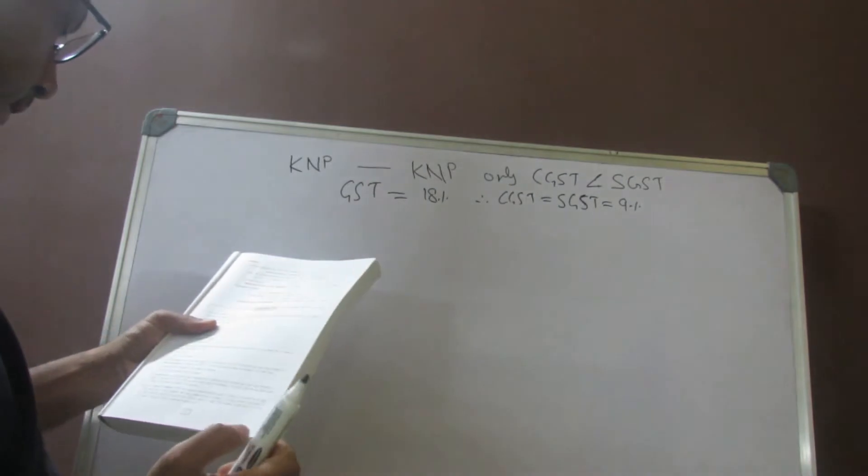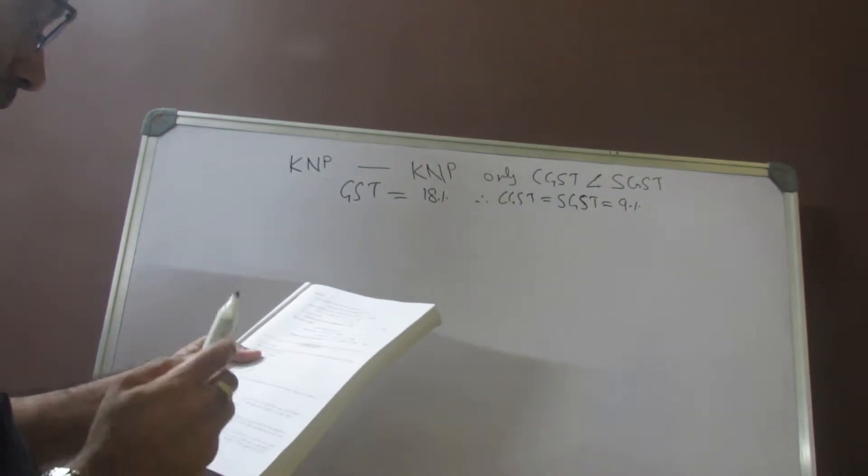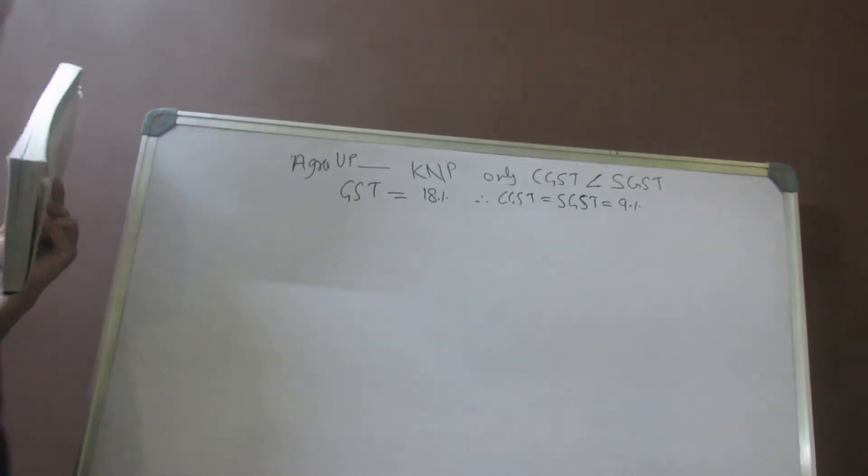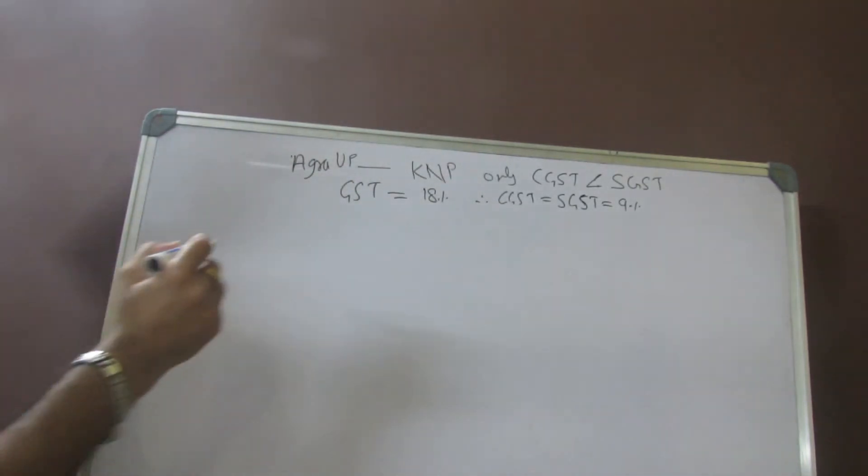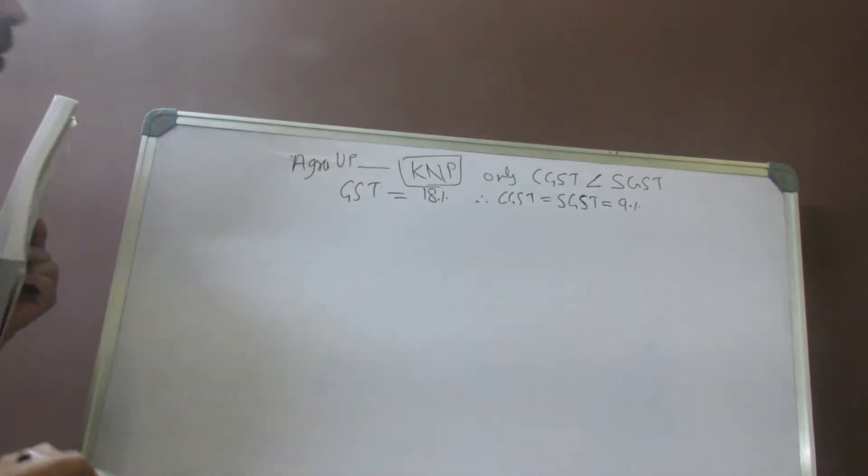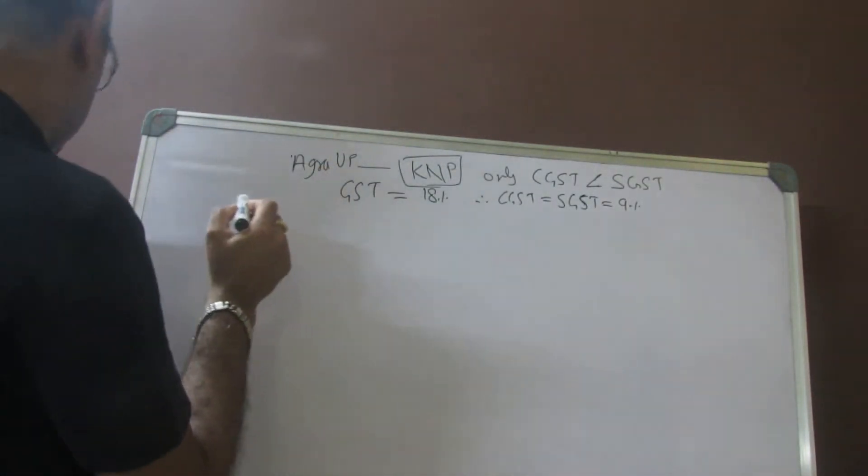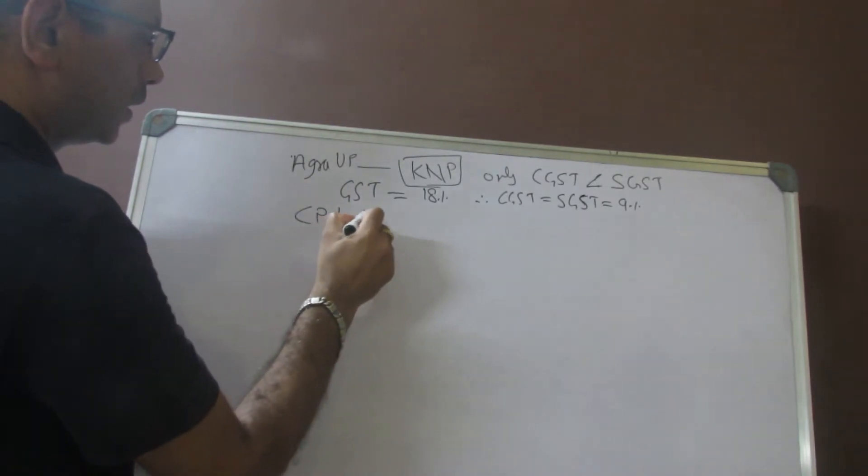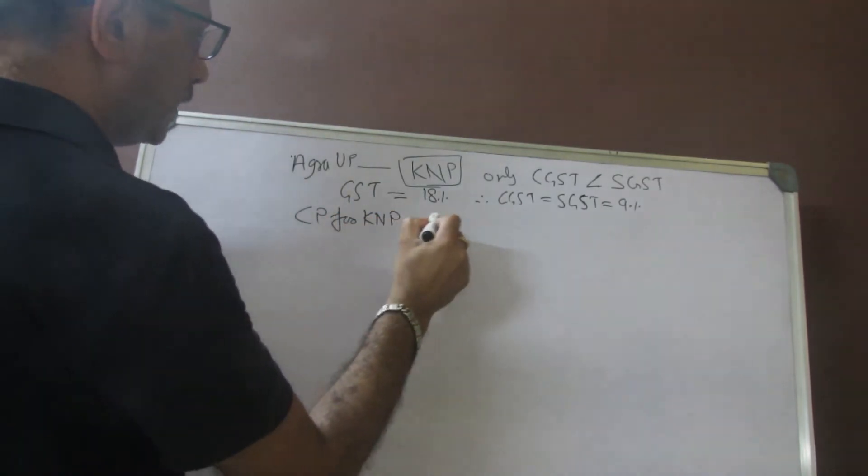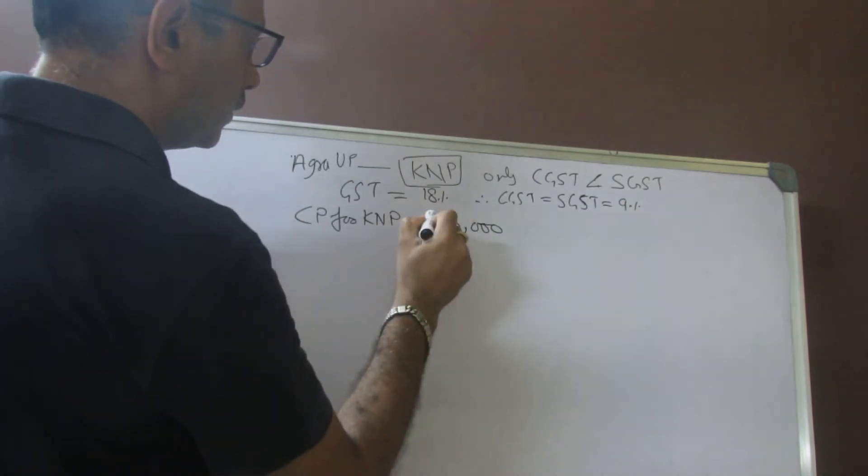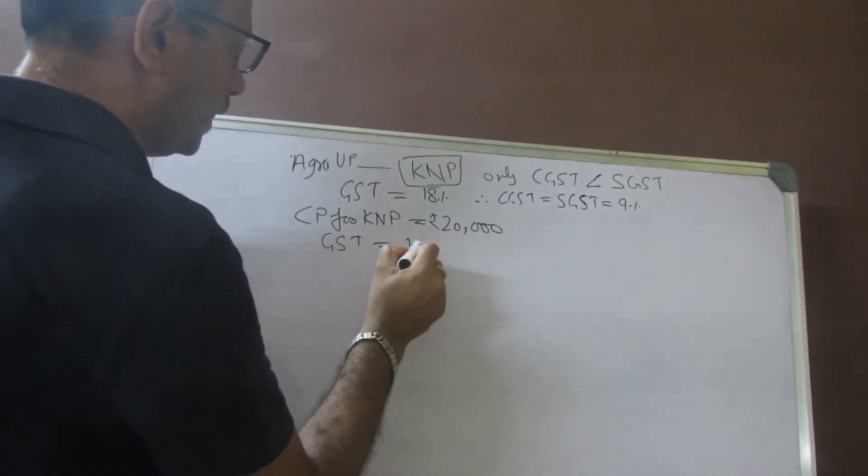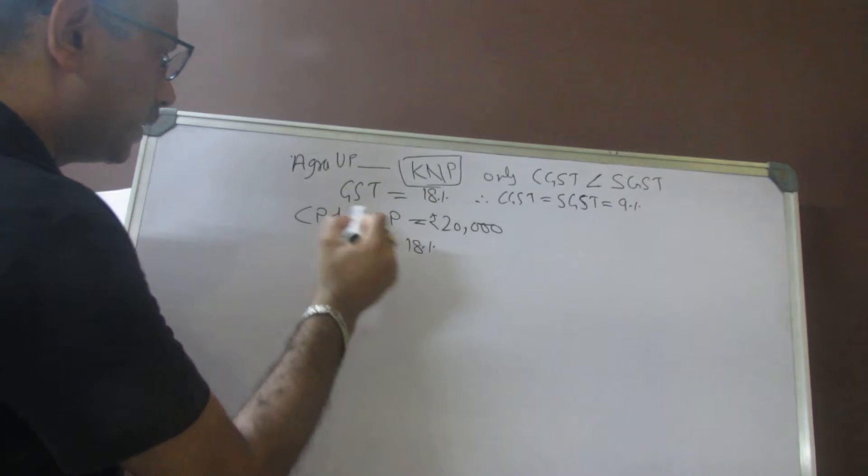Let us understand. From Agra, the goods have been sold from Agra, which is in UP, to Kanpur, which is again in UP. So we are supposed to find for Kanpur dealer. In the first part, let us understand CP for Kanpur dealer is 20,000 rupees and GST is 18%.